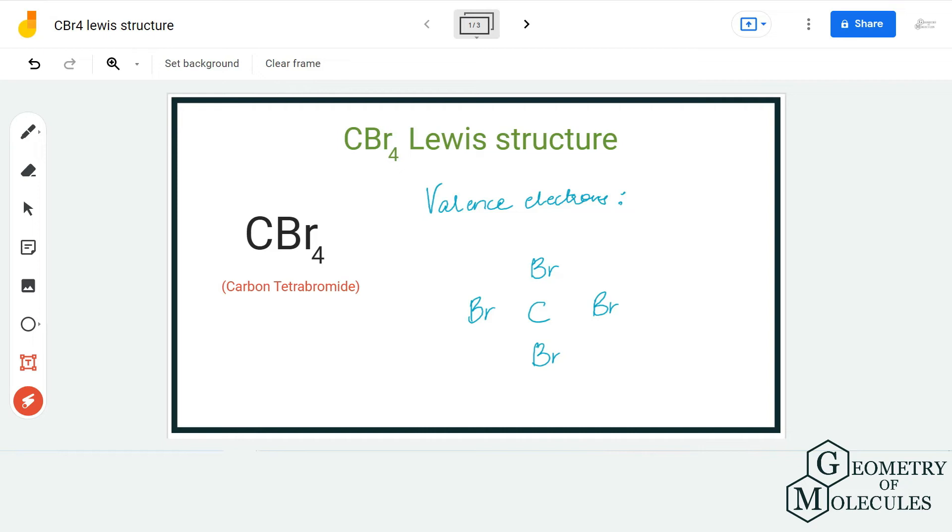Hi guys, welcome back to our channel. In today's video, we are going to help you find out the Lewis structure for CBR4 molecule. It's the chemical formula for carbon tetrabromide. To find out its Lewis structure, we are first going to determine the total number of valence electrons for this molecule. Here we have one carbon atom which has four valence electrons.